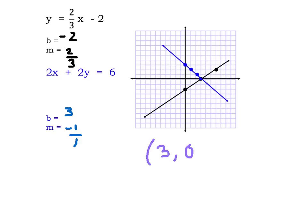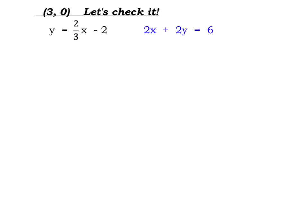Remember, we're going to write our solution as an ordered pair, two numbers separated by a comma and surrounded by parentheses. We should be able to check our solution, and if it's correct, it will work in both of our equations in our system. So our solution was 3, 0, so that means our x value is 3, and our y value is 0. We're going to substitute those values into the equation.